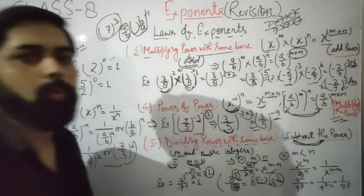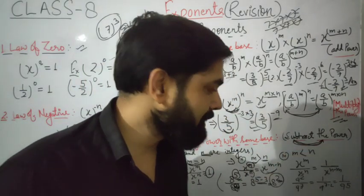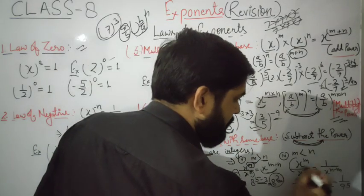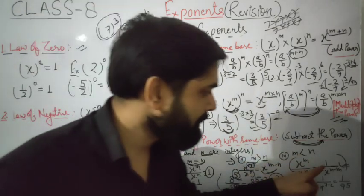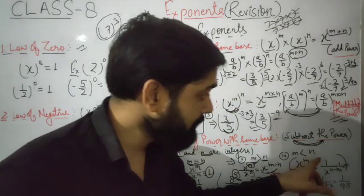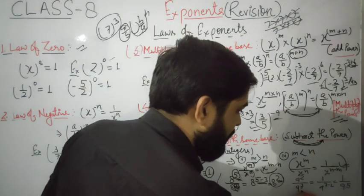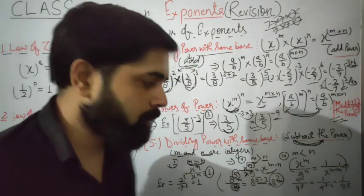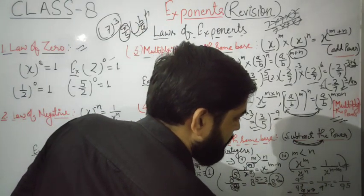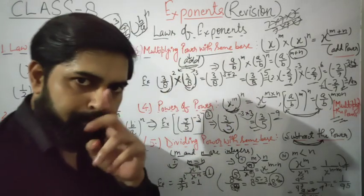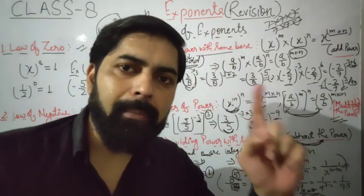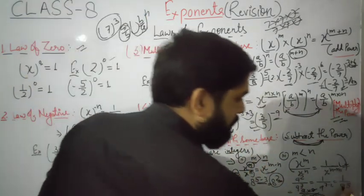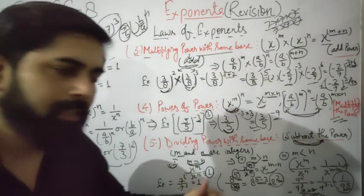Example: 8 to the power 5 divided by 8 to the power 3 — since 5 is greater than 3, the answer is 8 to the power 5 minus 3, which is 8 to the power 2. Third condition: when m is less than n. In this case the answer is one upon x to the power n minus m. Example: 9 to the power 2 divided by 9 to the power 7 equals one upon 9 to the power 5.